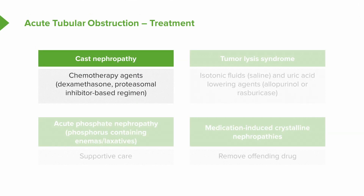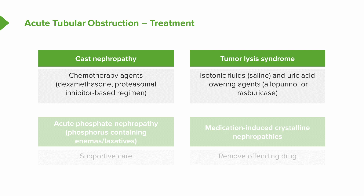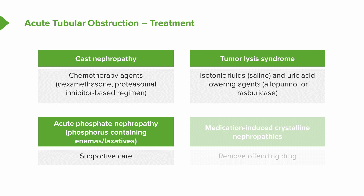For treatment of acute tubular obstruction: in cast nephropathy, we can administer chemotherapeutic agents like dexamethasone or proteasome inhibitor-based regimens aimed at shutting down immunoglobulin production. For tumor lysis syndrome, we aim at prevention — administering chemotherapy with high amounts of isotonic fluids like saline and uric acid-lowering agents like allopurinol or rasburicase to prevent production of uric acid and tubular obstruction. For acute phosphate nephropathy, unfortunately there is nothing we can do after the phosphorus-containing enemas or laxatives have been given, other than offer supportive care.